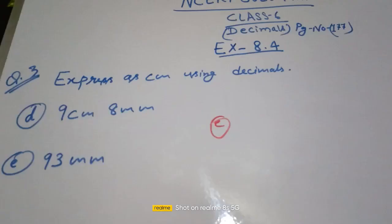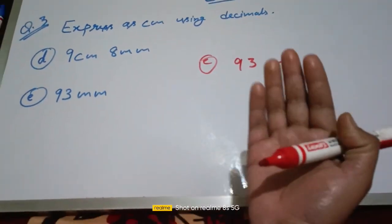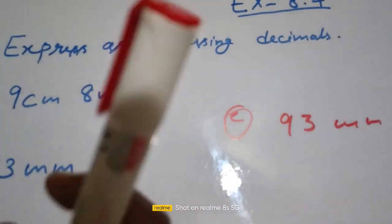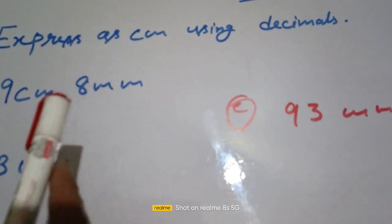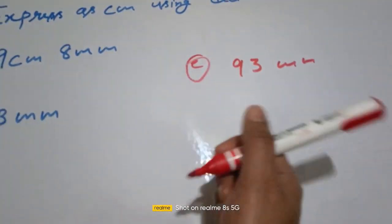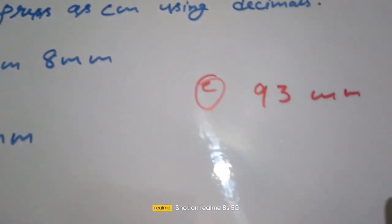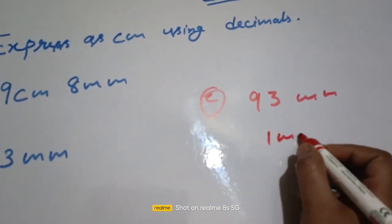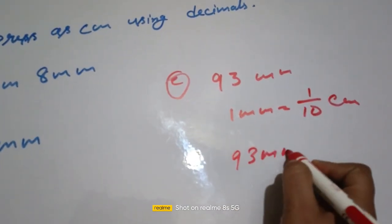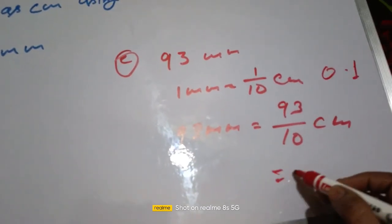Question number E: 93 mm. We use the same method. We know 1 mm is equal to 1/10 cm, so 93 mm is equal to 93/10 cm. How do we write this? 93/10 gives us 9.3.